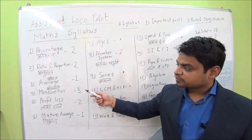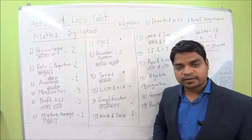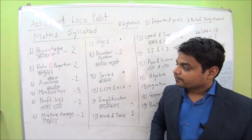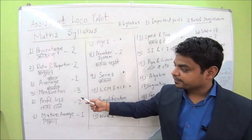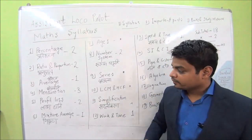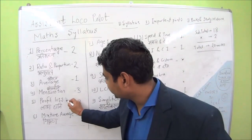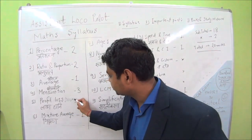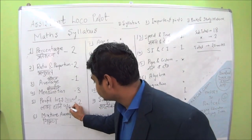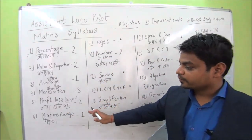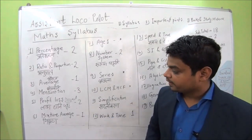The third topic is average, from which 1 question is formed. The fourth is mensuration — both 2D and 3D — from which 3 questions come. Then we have profit and loss, and you can also add discount to this since discount also falls under it, from which 2 questions are formed.